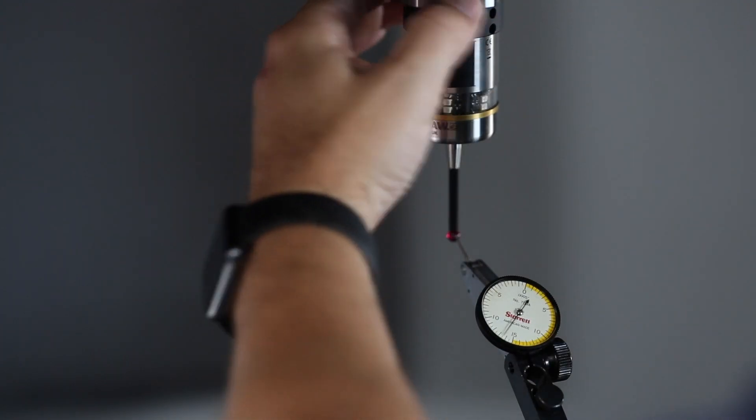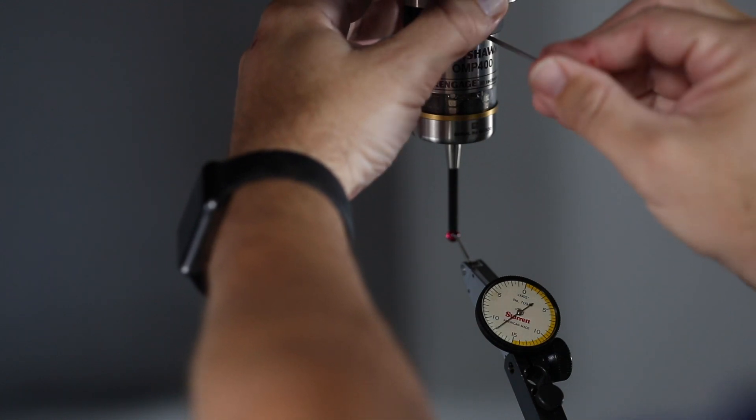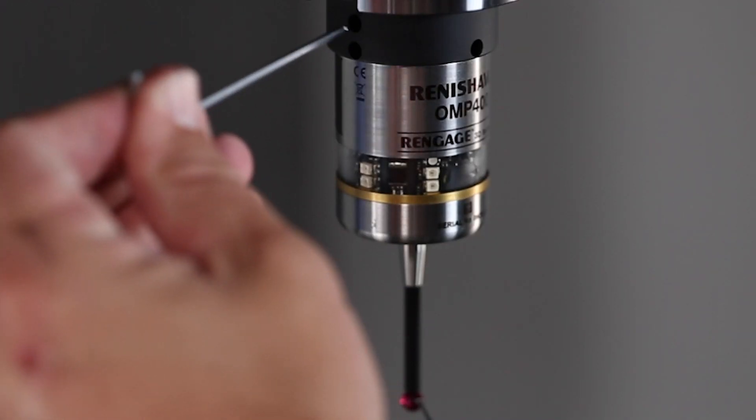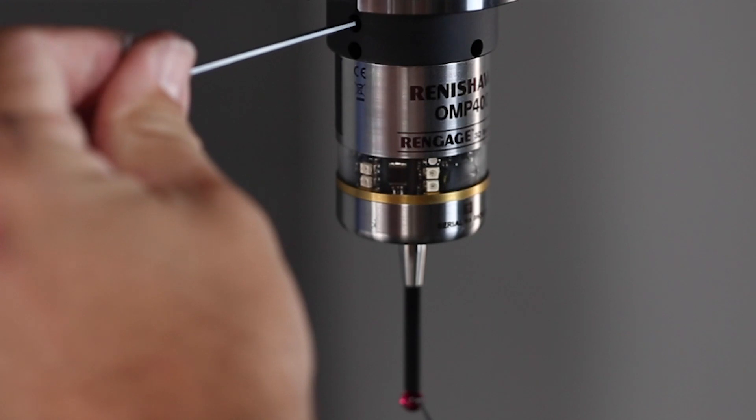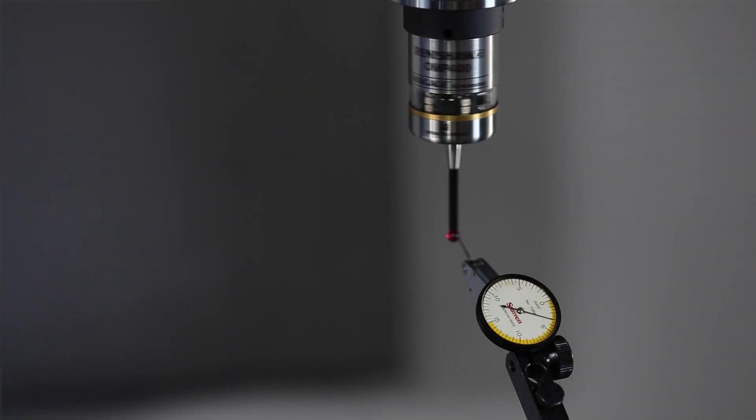We can then adjust the probe to within 5 tenths of an inch concentricity and lock our probe down using the same Allen wrench. There, we have now made our stylus ball concentric to the spindle of our machine. Let's get to calibrating.